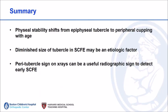In summary, physis stability shifts from the tubercle in early adolescence to the peripheral cupping later on in adolescence. The perhaps diminished size of the tubercle is related to the development of a slip. We feel that the peritubercle osteolysis sign on X-ray is a useful marker of a pre-slip in patients with SCFE. Thank you very much.